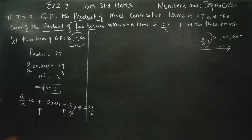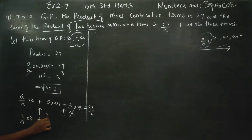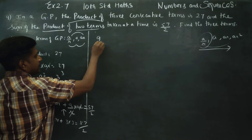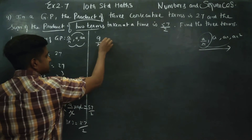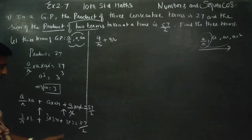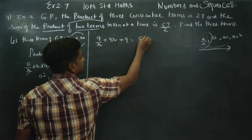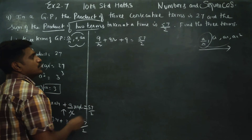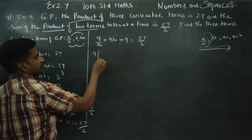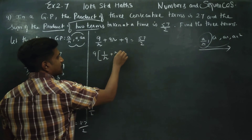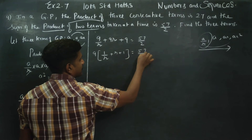Substituting A equals 3: 3 by R into 3, plus 3 into 3R, plus 3 into 3, is equal to 57 by 2. This gives 9 by R plus 9R plus 9 is equal to 57 by 2. Factoring out 9: 1 by R plus R plus 1 is equal to 57 by 2.